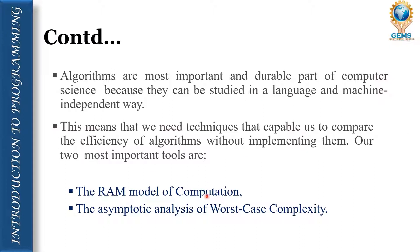The sixth point says: how are we going to know the efficiency of an algorithm, and how are we going to measure its capacity? We have two ways. First: the random access machine model of computation, which helps us measure the efficiency of an algorithm. Second: asymptotic analysis of worst-case complexity. We have three types of cases — worst case, best case, and average case. Asymptotic analysis focuses on the worst-case complexity.